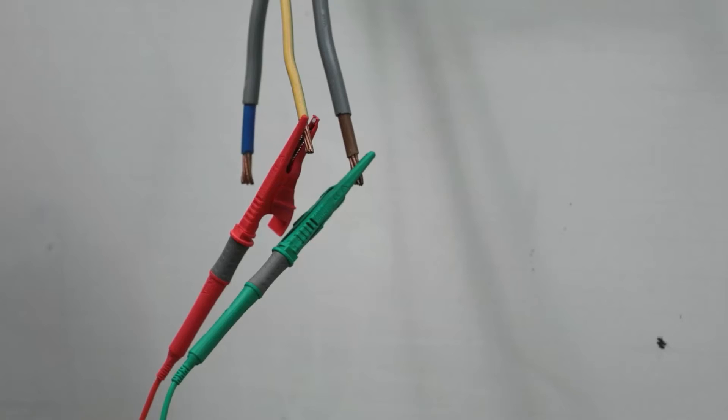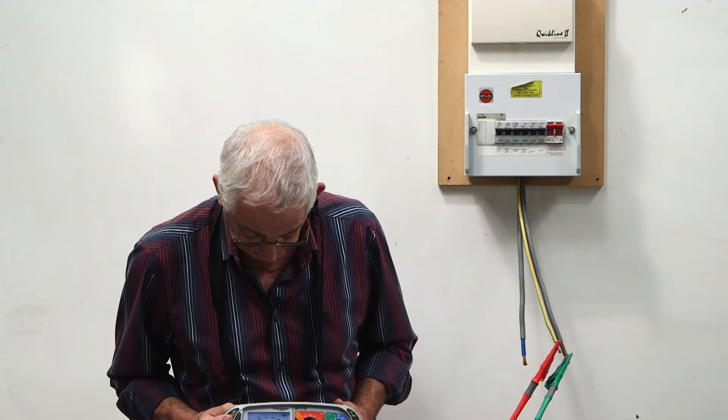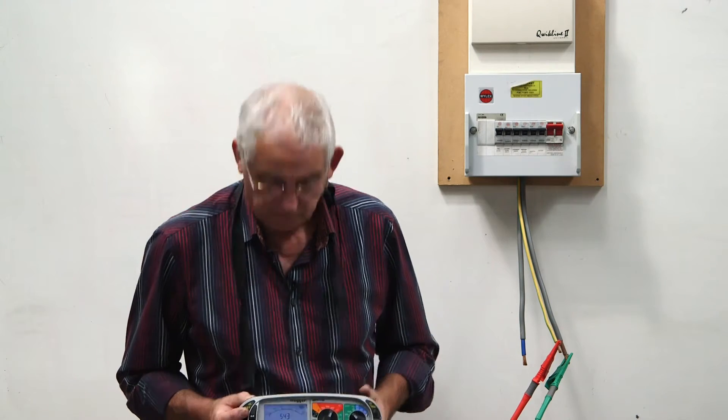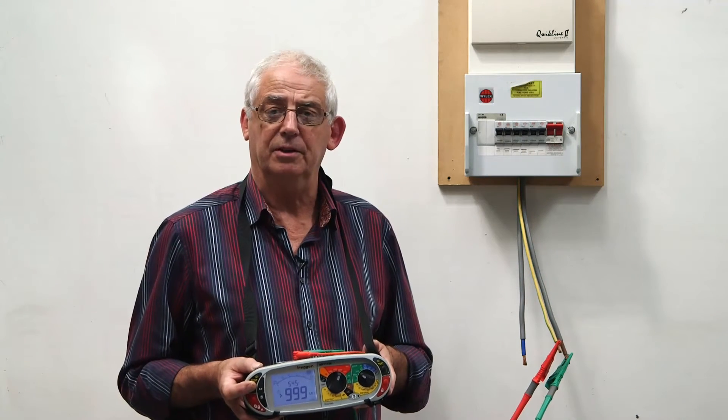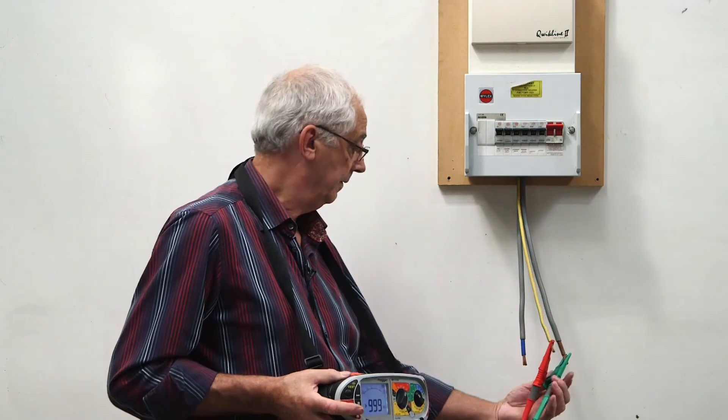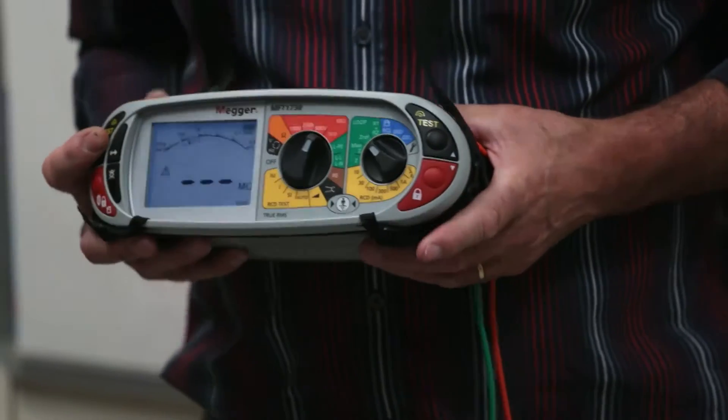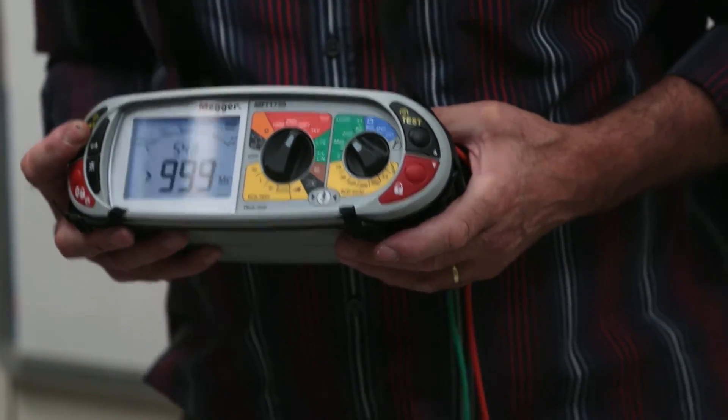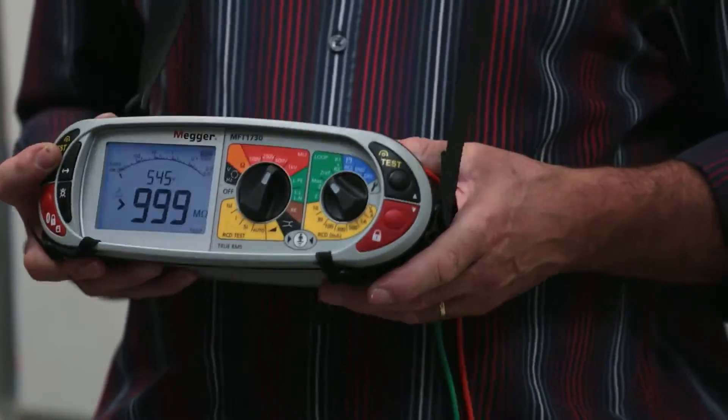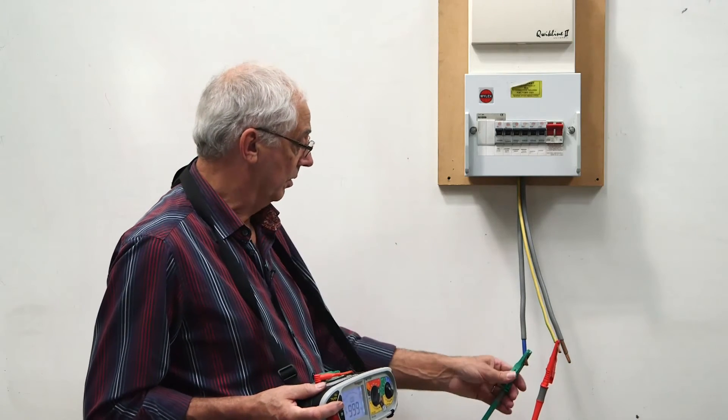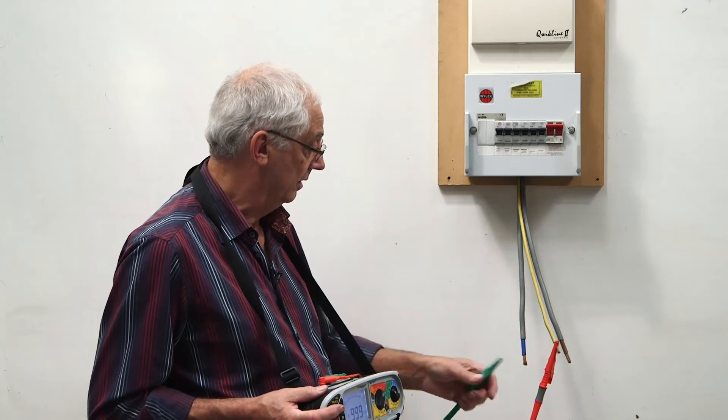So line to earth now. Greater than 999, so I know that's okay. I know that my fault lies between line and neutral.